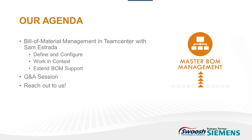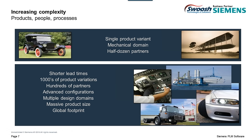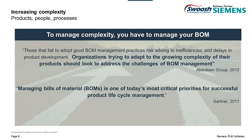Thank you, Diana. So like Diana was saying, we're going to be focusing on BOM management. There's a quick agenda we're going to go through. Complexity is increasing everywhere — from products and their life cycles to supply chains and customer requirements to even your own internal organizational changes. Companies find it a struggle to maintain accurate product definition with everybody in the company. To manage this complexity, you need to take control of your BOM. Just take a look at these two quotes from the Aberdeen Group and Gartner.